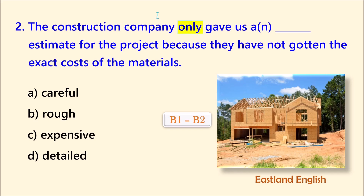The first keyword only implies limitations. We need an adjective for the word estimate. Because of the word only, we can eliminate both A and D. Both of these adjectives would not be used with the word only. The last key phrase is not gotten the exact costs. If they haven't gotten the exact costs, we wouldn't know if it's expensive or not. The correct answer is rough, which means not exact. Number two: The construction company only gave us a rough estimate for the project because they have not gotten the exact costs of the materials.